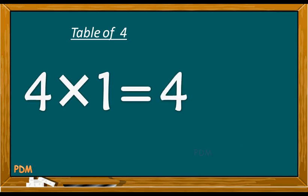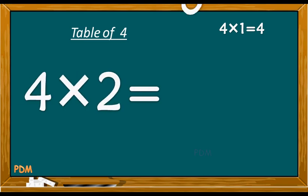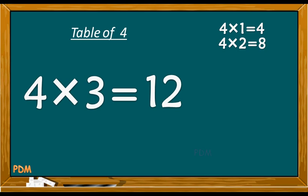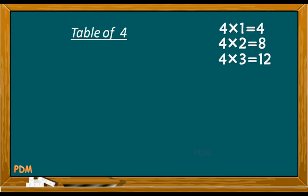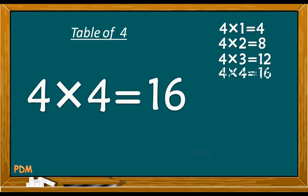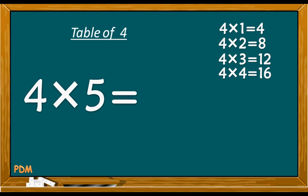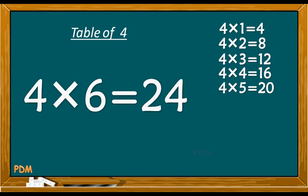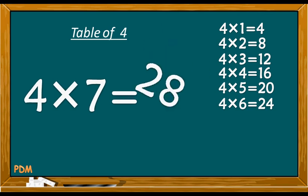Four ones are four. Four twos are eight. Four threes are twelve. Four fours are sixteen. Four fives are twenty. Four sixes are twenty-four. Four sevens are twenty-eight.